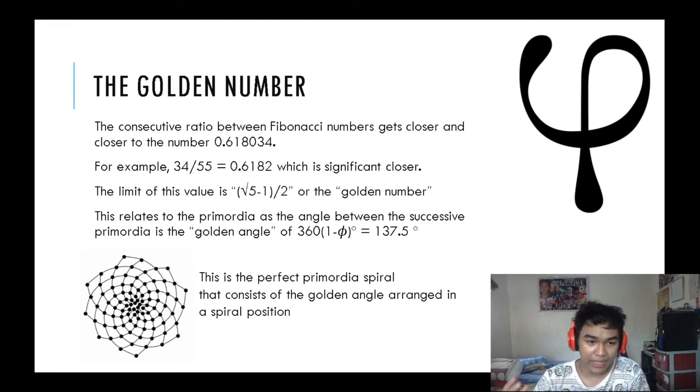How does this relate to the primordia? It is because the successive primordia or the golden angle can be derived by 360 times 1 minus the phi or the golden number degree, which equals 137.5. As you can see here, that's a perfect primordial spiral as can be derived from what is in here.